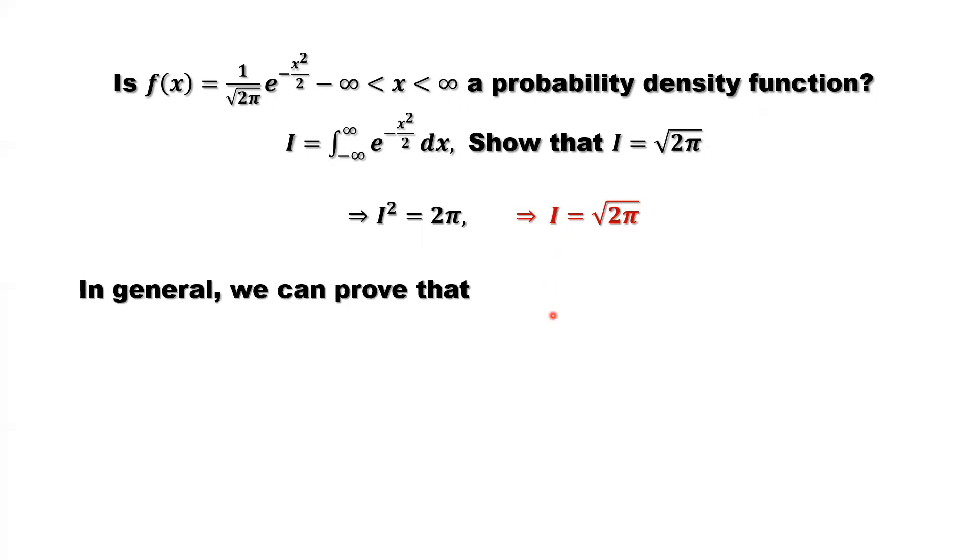In general, we can prove the following. This is a general density function for normal distribution with mean μ and variance σ². It's a similar idea. Actually use this idea. Replace the variable here. The whole thing here. Change the variable. We will easily get the result.